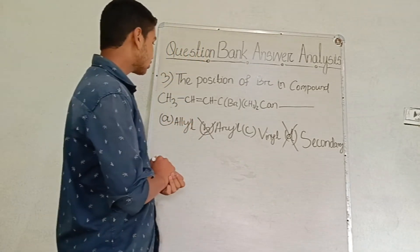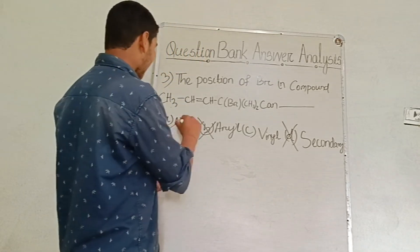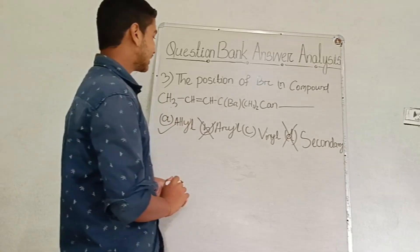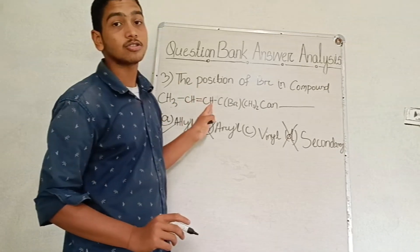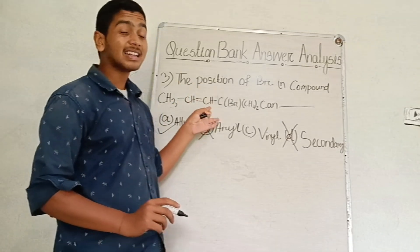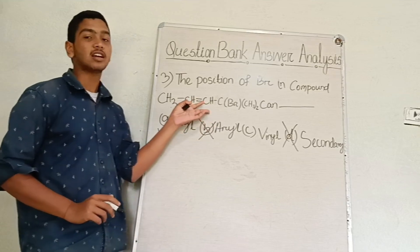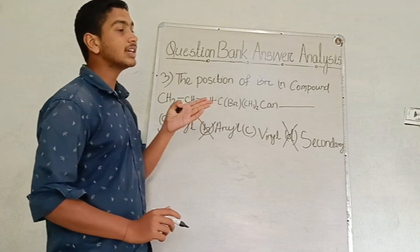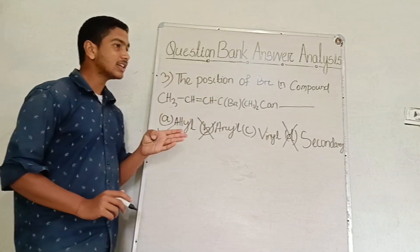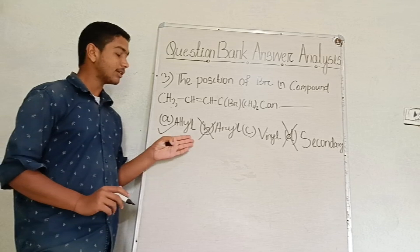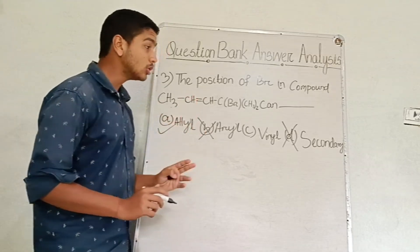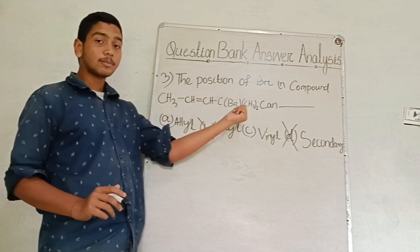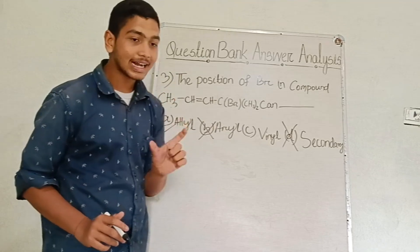What is the answer? Here, the answer is allylic. Allylic compound. Allylic compound — the compound when you have the presence of the halogen.